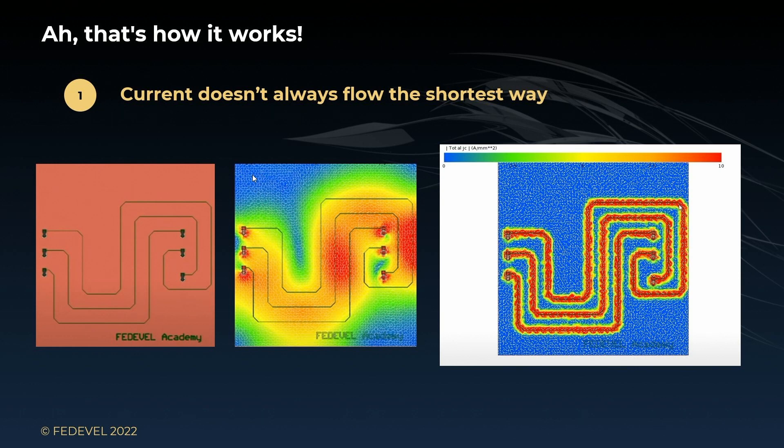The blue color means there are no currents, the red color means a lot of current. When we increase the frequency to 1 MHz, that is what we can see on the third picture. The return currents for 1 MHz signals, they are very nicely flowing on the ground plane, exactly under the tracks.